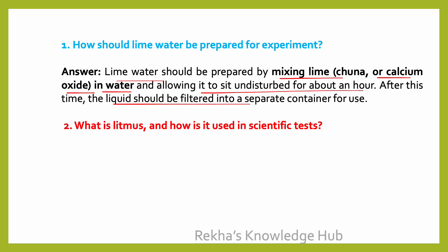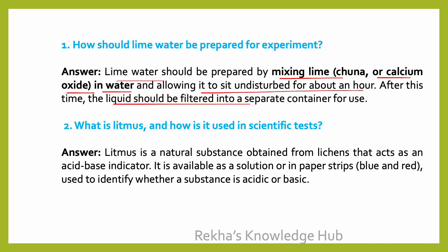What is litmus and how is it used in scientific tests? Litmus is a natural substance obtained from lichens that acts as an acid-base indicator. It is available as a solution or in paper strips — blue or red — used to identify whether a substance is acidic or basic.